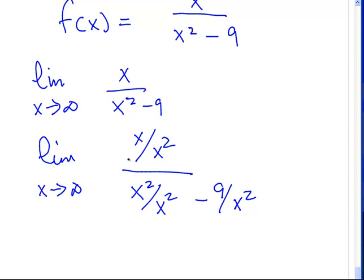x over x squared, that becomes 1 over x, and 1 over infinity when we evaluate it. That's just going to be 0. Likewise, that's going to be 0. And, x squared over x squared, that will become 1.